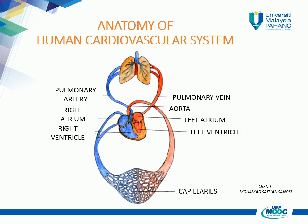The blood circulation has two parts: the pulmonary and systemic. Pulmonary circulation is the short section that carries blood low in oxygen from the right side of the heart to the lungs for refueling, then returns oxygen-rich blood to the left side of the heart. The systemic circulation carries oxygen-rich blood from the left side of the heart all around the body, and returns blood that is low in oxygen to the right side of the heart.